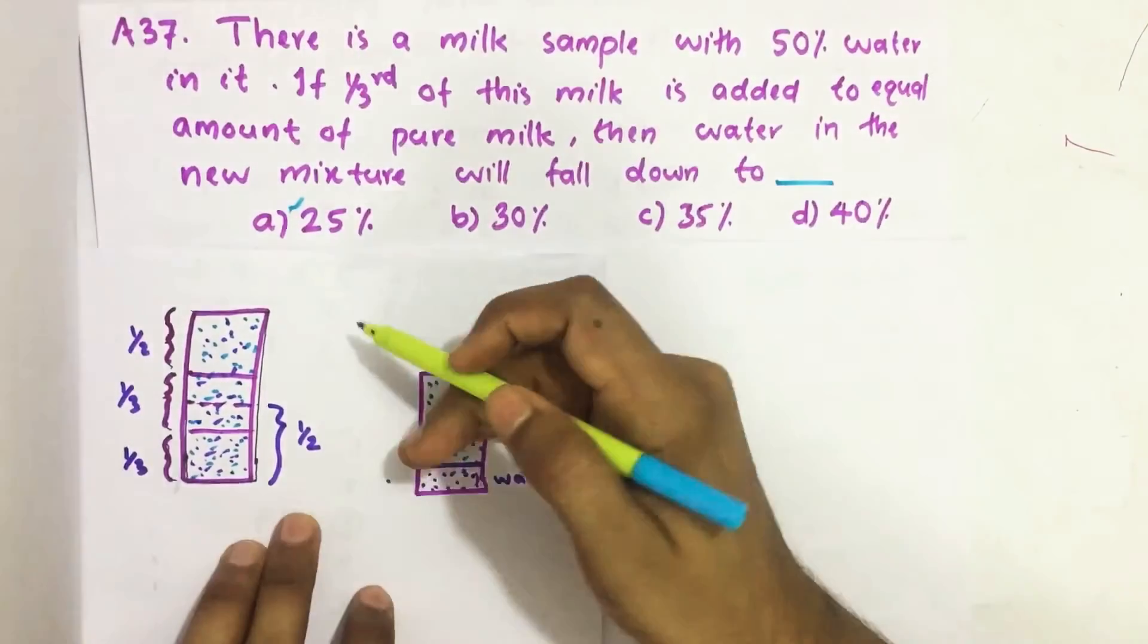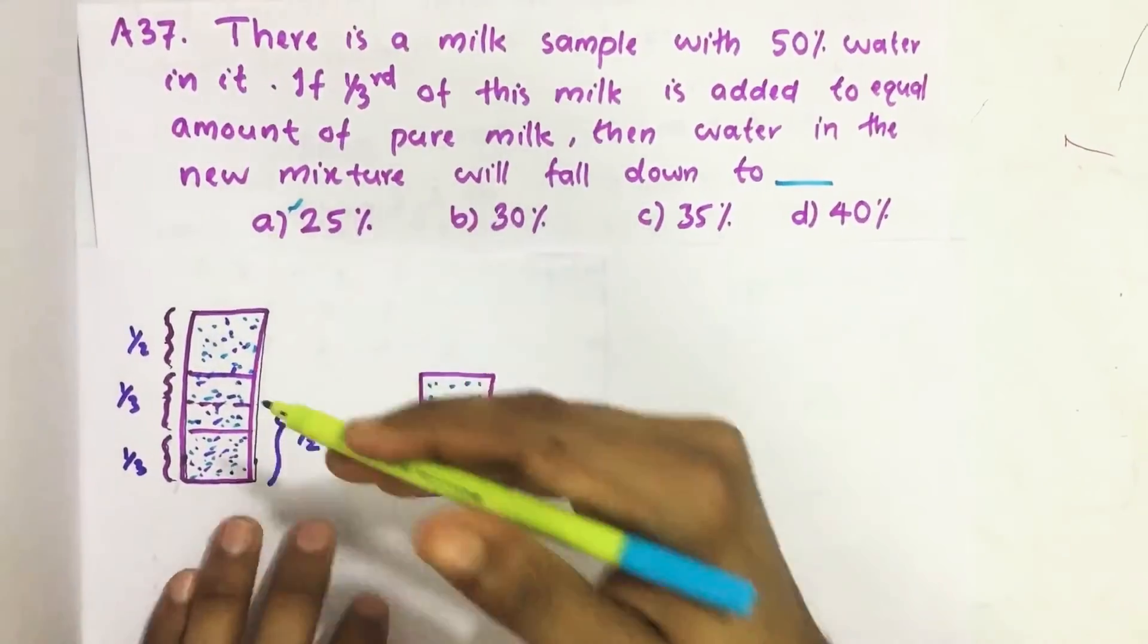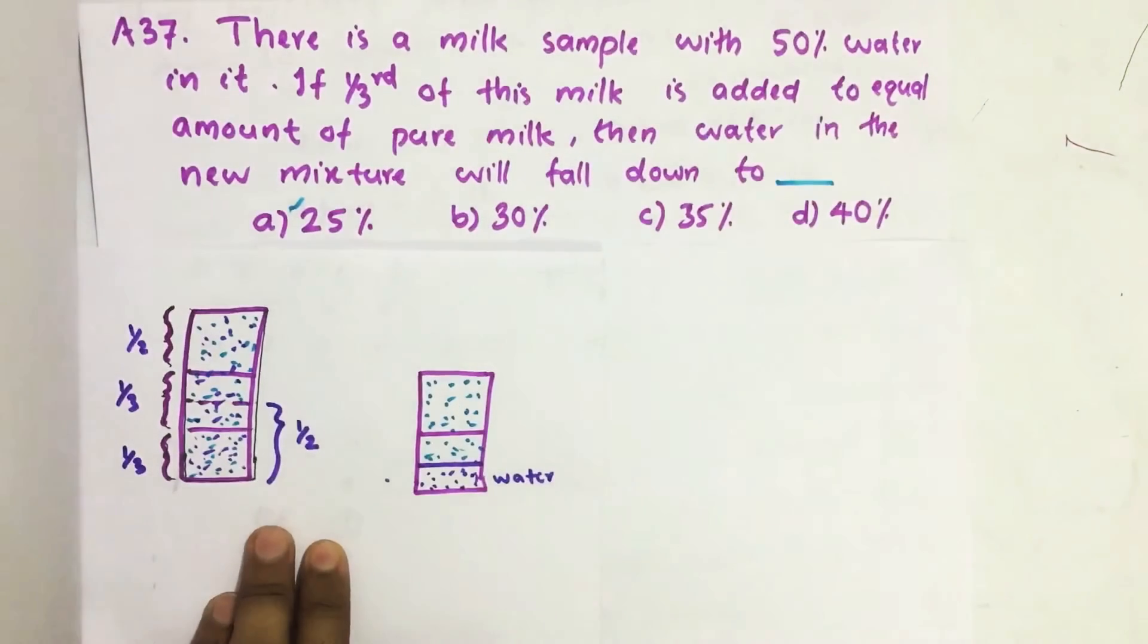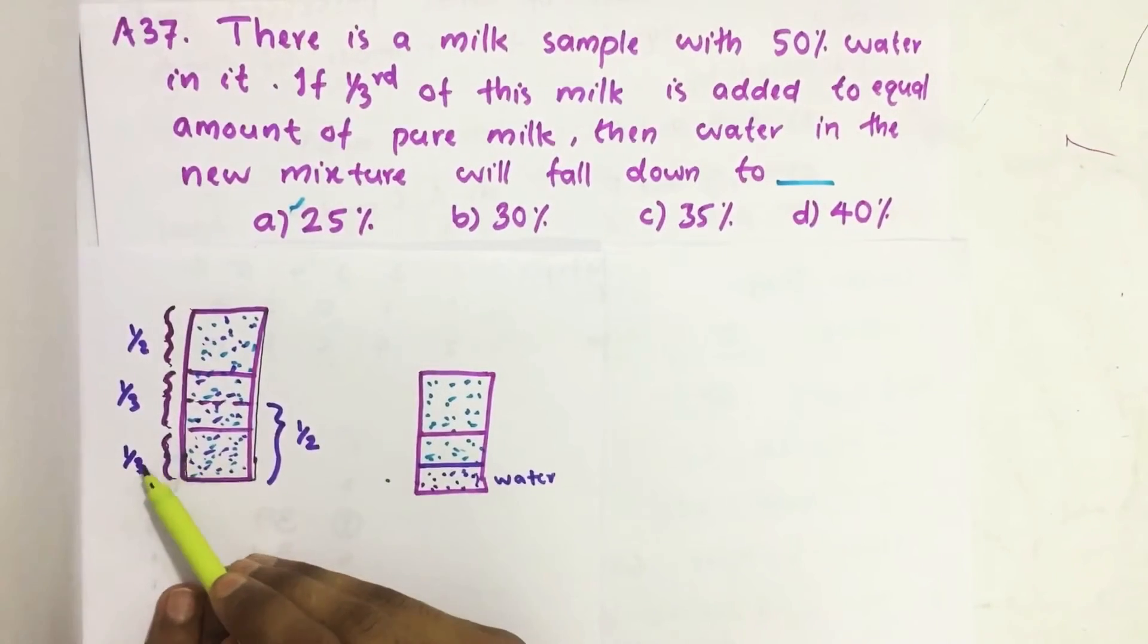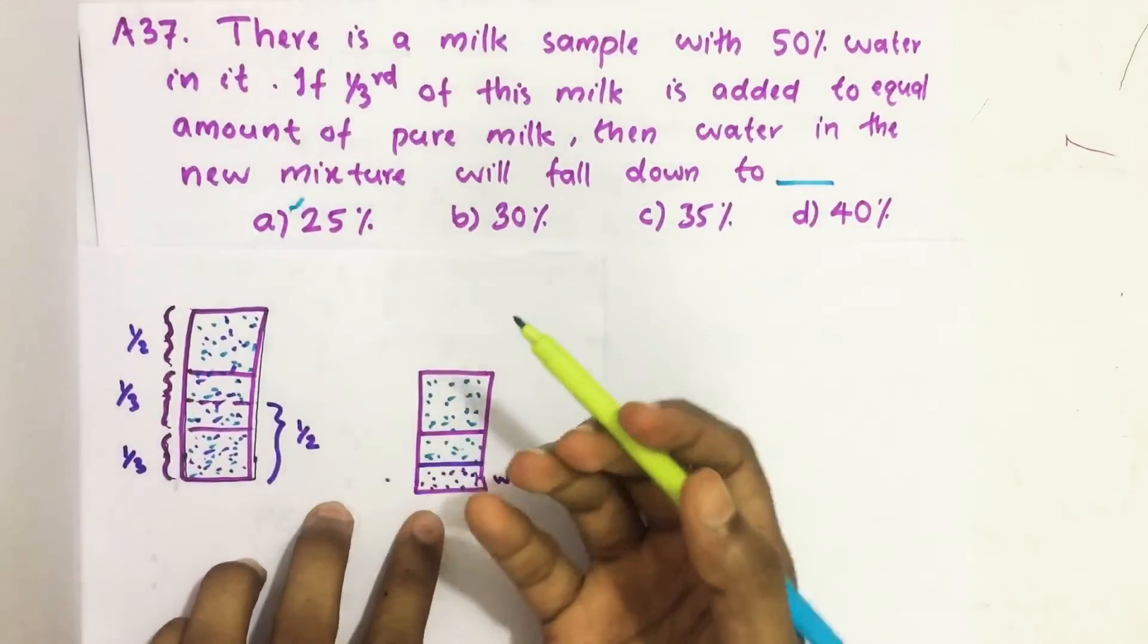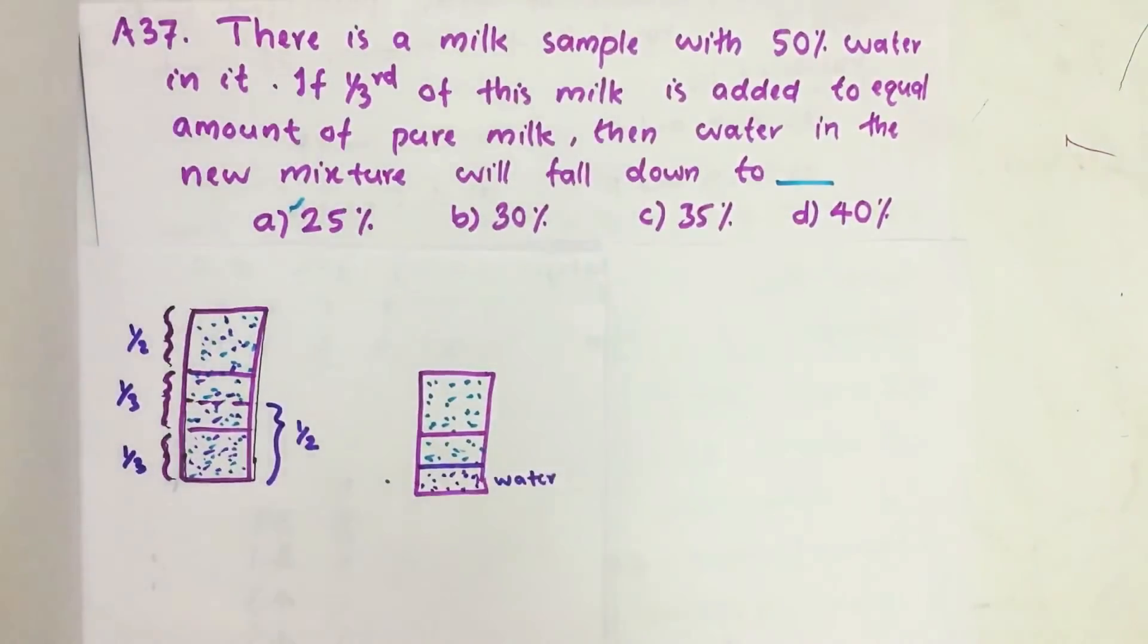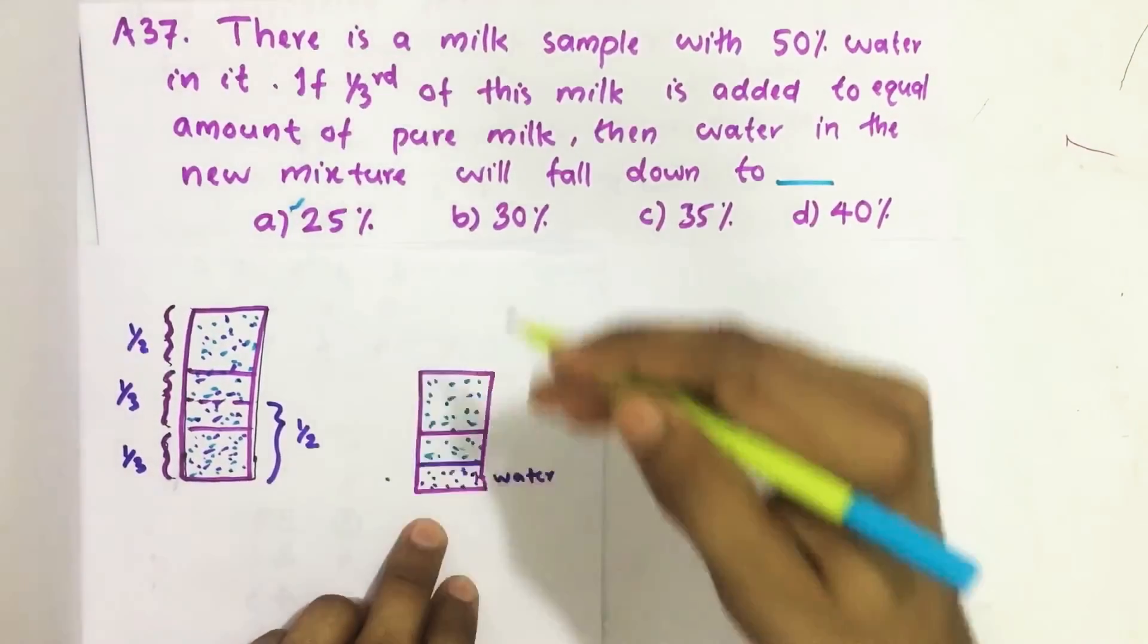Now it is given that there is a jar. In this jar it is a mixture of water and milk, and the percentage of water equals 50 percent. Then we took one third of this mixture and added the same amount of one third of pure milk to it. Then what is the percentage of water in the new mixture?